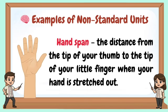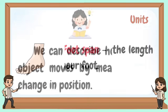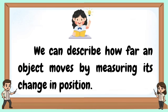Examples of non-standard units. Hand span: the distance from the tip of your thumb to the tip of your little finger when your hand is stretched out. Foot span: the length of your foot. We can describe how far an object moves by measuring its change in position.